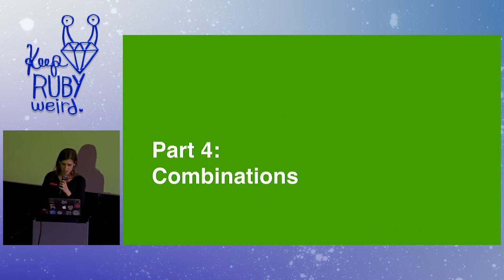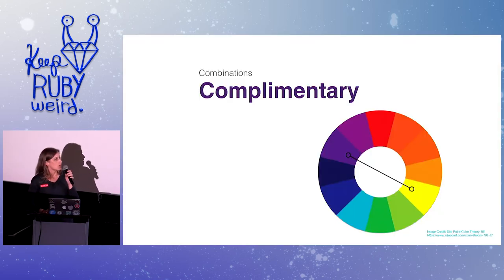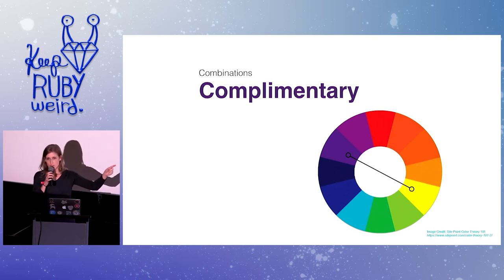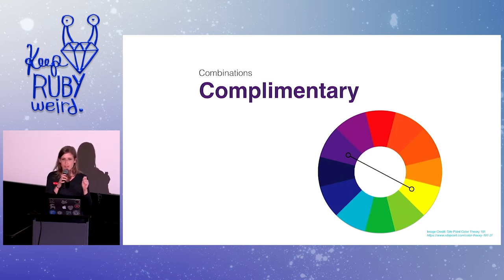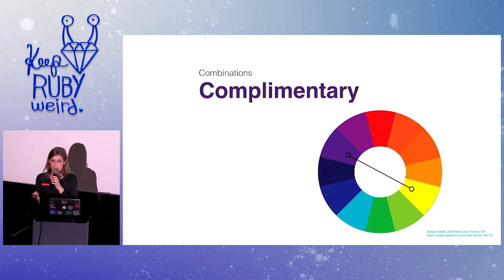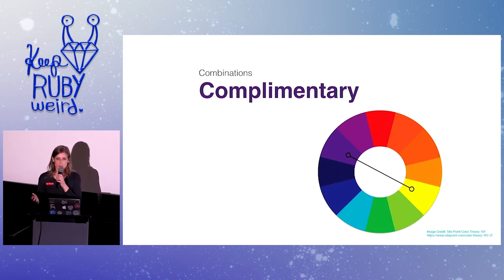Next, we have color combinations — let's talk about how we're actually going to combine colors together effectively. The most basic, straightforward type of color combination is a complementary color combination. These are two colors that sit directly across from each other on the color wheel — like purple and yellow. It's going to be a pretty intense pairing. There may be some visual vibration between the two when butted up next to each other, just because it's a very high-contrast color pairing. It's easy to make, but not necessarily particularly nice.